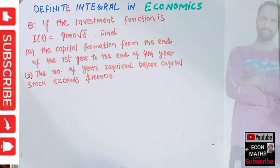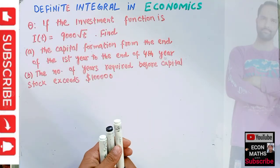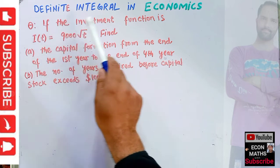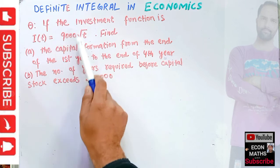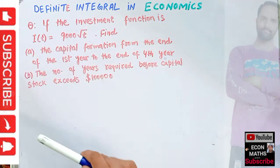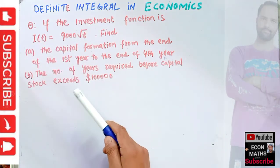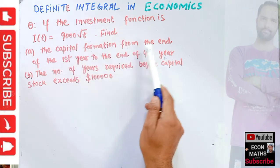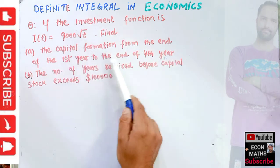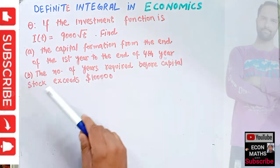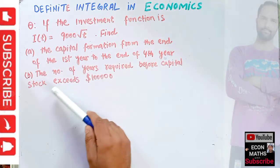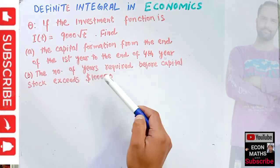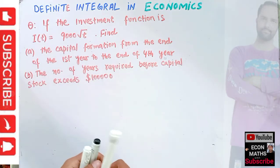In this video we will see the application of definite integral in economics. The investment function is given as I(T) = 9000√T, where T is the time. We have to find the capital formation from the end of the first year to the end of the fourth year. The second part asks us to calculate the number of years required before the capital stock exceeds one lakh dollars.